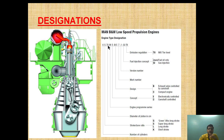M is the engine program series. E is the type of control — whether it is electronic control or camshaft control, that is indicated by E. If here it is C, it means the main engine is camshaft controlled. If here it is E, it means the main engine is electronically controlled.